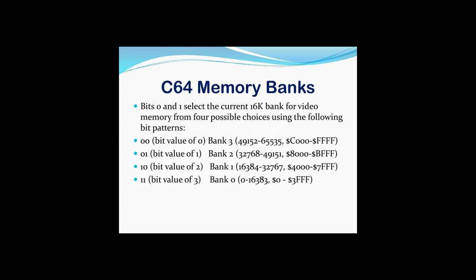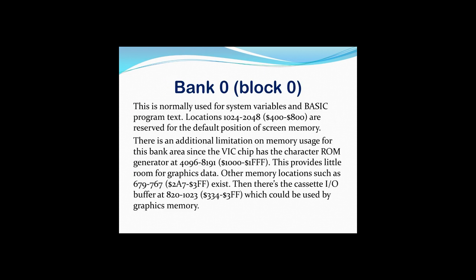Here are the C64 memory banks: bits 0 and 1 select the current 16K bank for video memory, with four possible choices using the following bit patterns — you can identify them with the binary codes, and you can see the decimal and hex values next to them. Essentially it's a way of utilizing memory in specific locations and accessing more memory as a result. Depending on where you set the bank bits determines how much memory you have and where the graphics data falls.